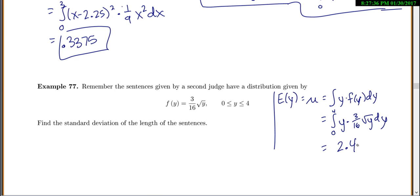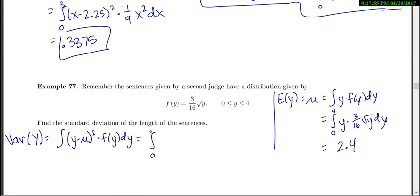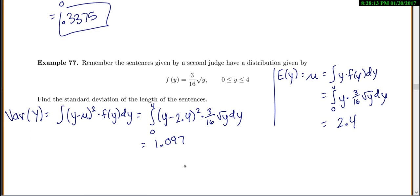Let's find the standard deviation. Before we can find standard deviation, we find the variance. The variance equals the integral of y minus the mean, squared, times the PDF of y. So we integrate from 0 to 4 of (y minus 2.4) squared times (3/16)√y dy, which equals 1.097. The standard deviation is the square root of 1.097, which equals 1.047.